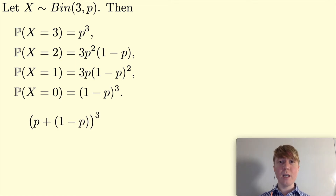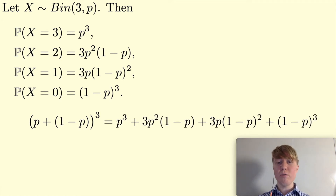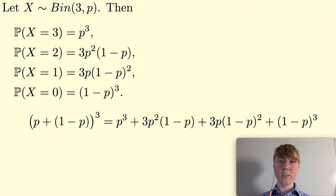Things get interesting when we compare this to a specially chosen binomial expansion: (p + (1-p)) all cubed. Never mind the fact that this equals 1. When we expand it, we get p cubed plus 3p²(1-p) plus 3p(1-p)² plus (1-p)³. Hopefully you've spotted that all the terms in the binomial expansion are exactly the binomial probabilities. This video explores why these two things are connected and the deeper structure behind it.